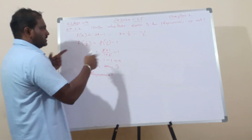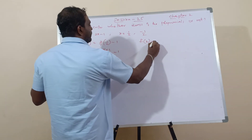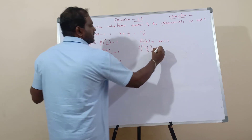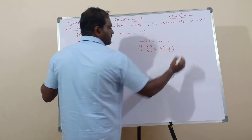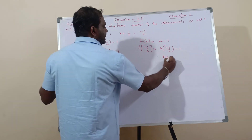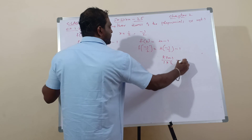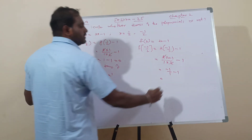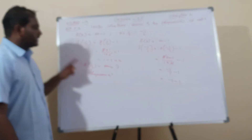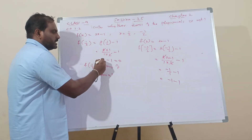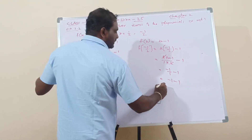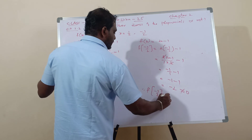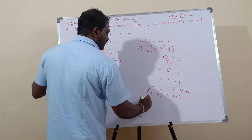Now for f of minus 1 by 2: f of x equals 2x minus 1. Substituting, we get 2 into minus 1 by 2 minus 1. That gives minus 1 by 1 minus 1, which is minus 1 minus 1, equals minus 2, which does not equal 0. Therefore f of minus 1 by 2 is not a zero of the polynomial.